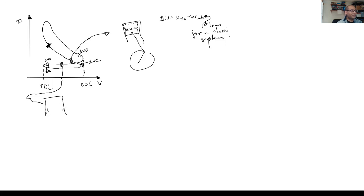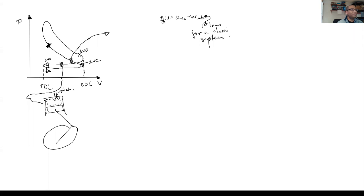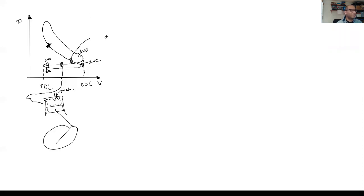If I pick any point along that bottom portion of the path and draw my system, I now have an open system — the piston-cylinder assembly with the crank arm. In this particular case the exhaust valve is open, so there's a hole with mass flowing out, m-dot exhaust. I need to write the first law for an open system.